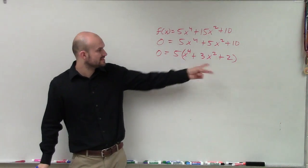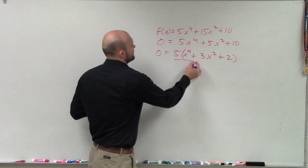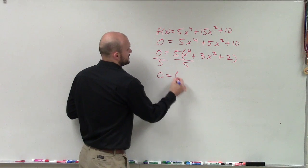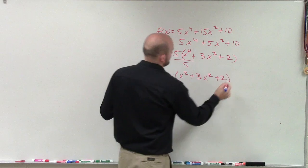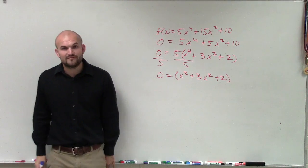Now I have five times this equals zero. I can get rid of the five by dividing five on both sides. So if I have zero equals x squared plus 3x squared plus 2.